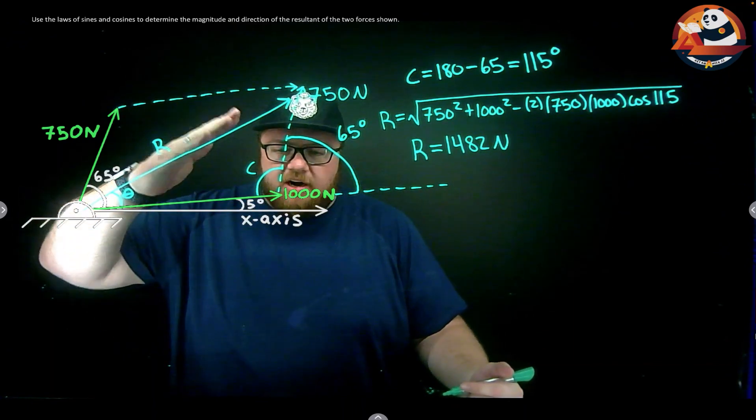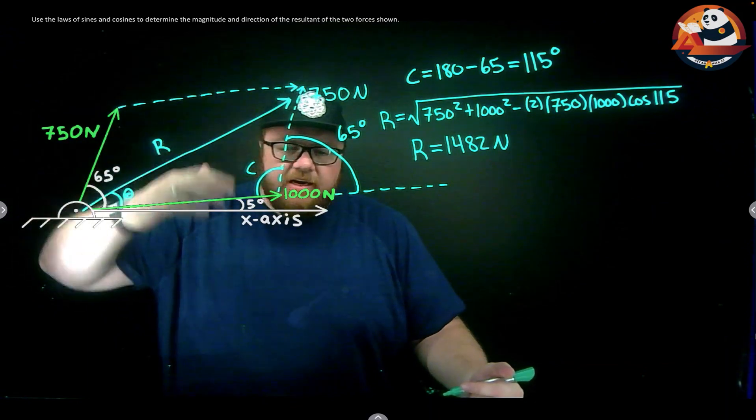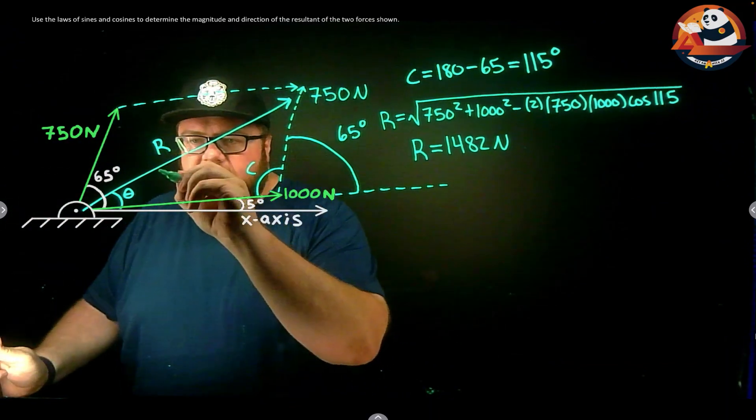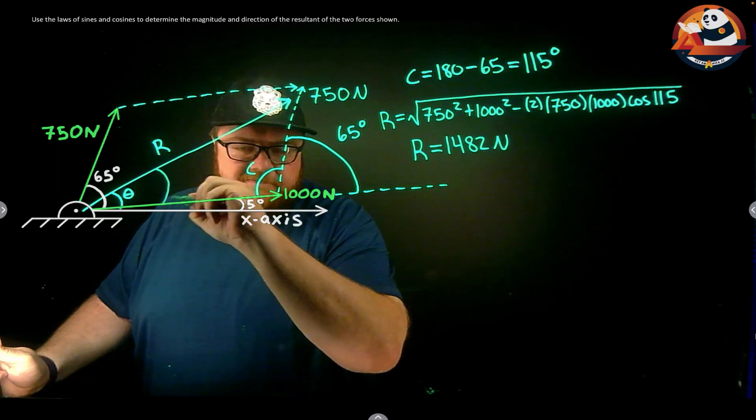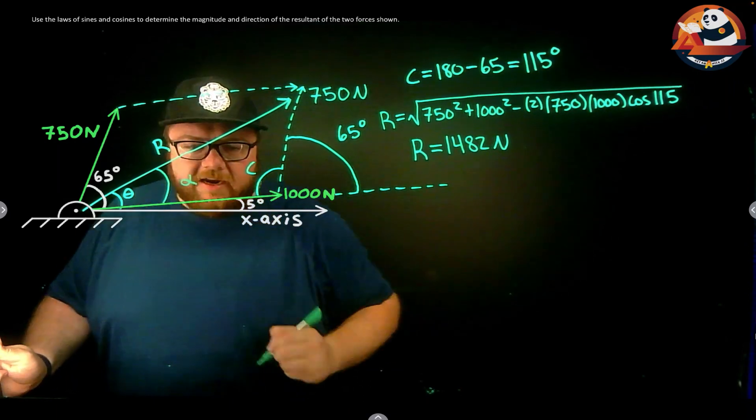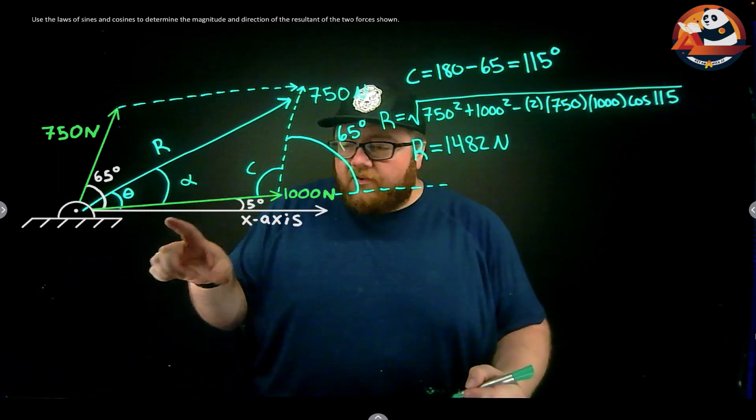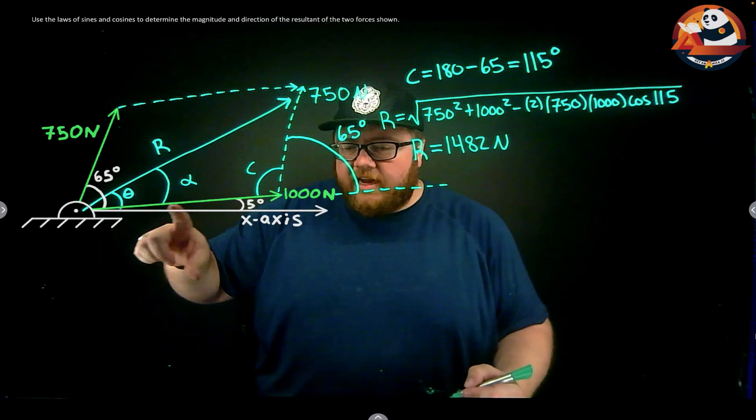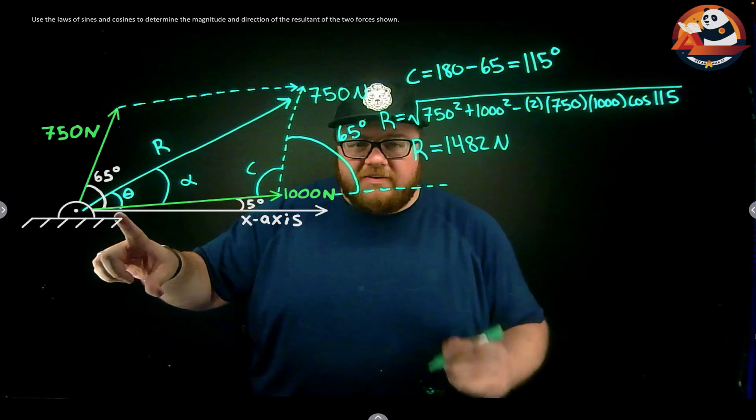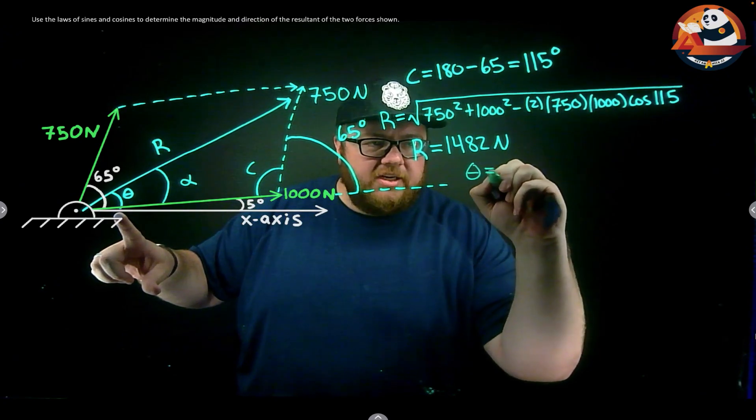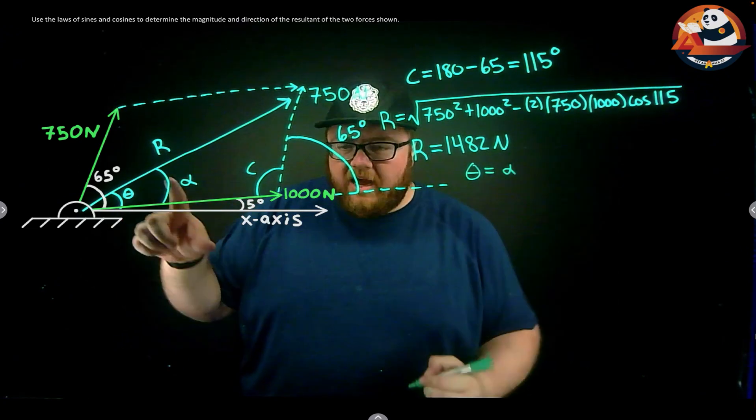Let's work with that 1000 to R. So we want this angle right here and I'm going to call that angle alpha. That's useful for me because I can say even though I can't directly get theta from the law of sines, I know that theta should get me to alpha.